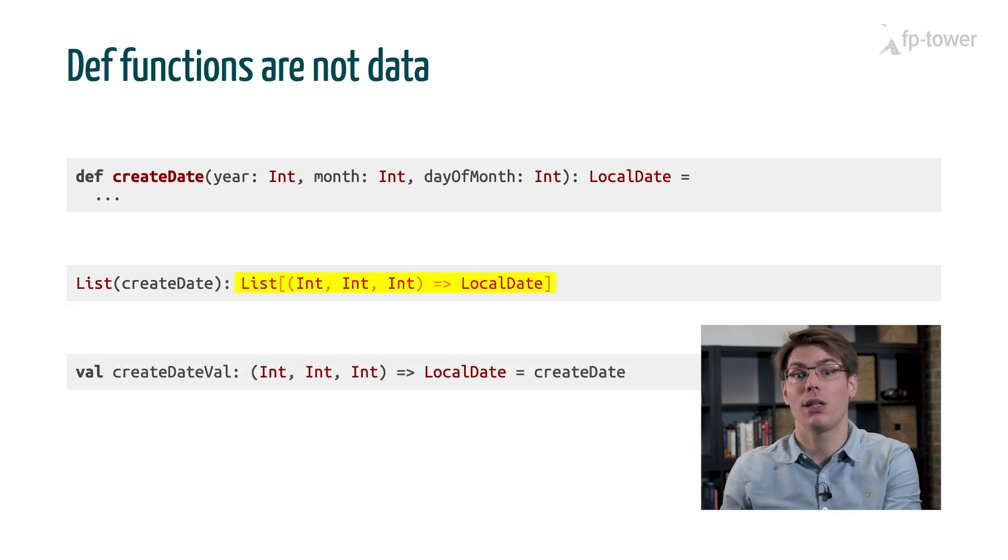For example, if we say that we are expecting a list of type triple int to local date, then this time the compiler will be able to transform our method into a val function automatically, without an underscore. And in practice, we often use val function as an anonymous function inside of a larger computation. In that case, we know the expected type, which means that most of the time, we can convert a def function into a val function without any additional syntax or even noticing that there was a conversion.